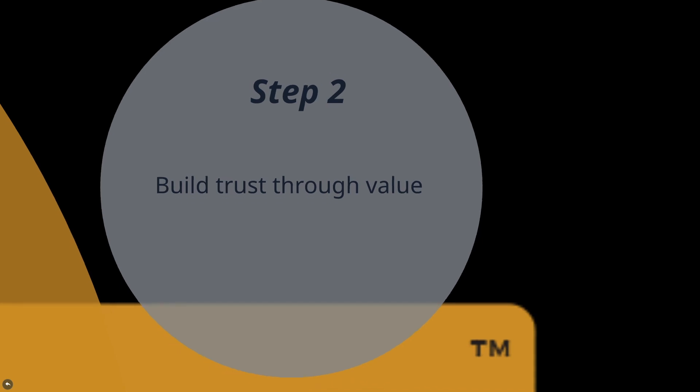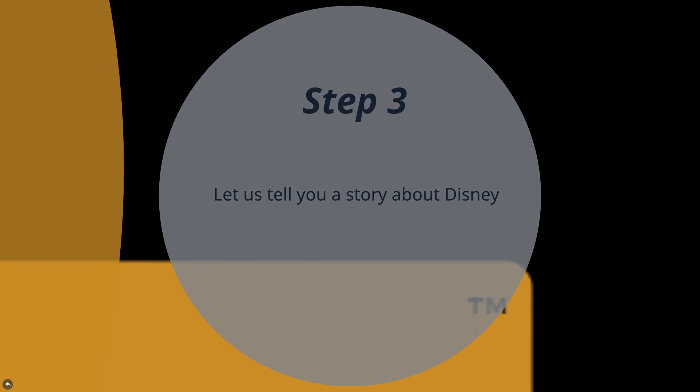Step two: build trust through value. Step three is telling a story. This is super important for people being able to relate or connect. If you can get your audience to connect with you somehow, they're going to feel closer to you — even if they've never met you. They're going to feel like you care, like your brand cares, and they're going to feel connected. This is why people wait hours in line every time there's a new iPhone — they are emotionally connected to the brand. Human beings as buyers are emotional. People are so heavily emotion-driven that if you encompass them in a good story, they'll spend money.